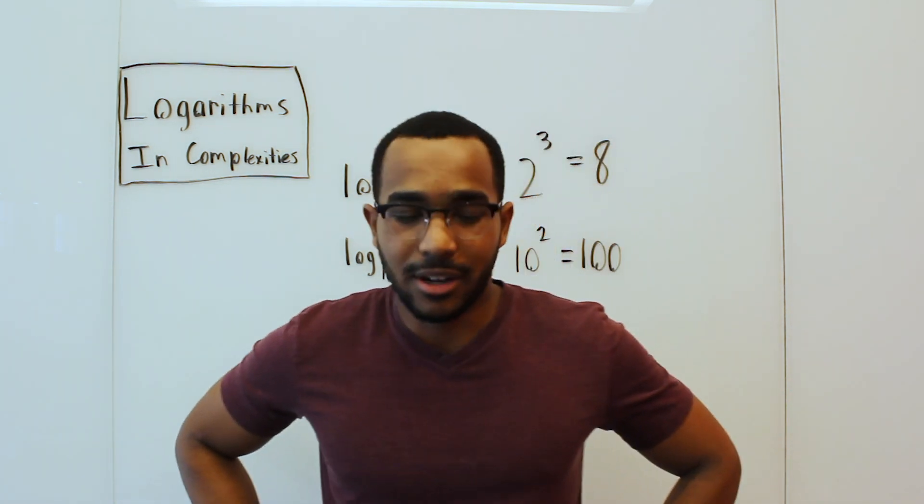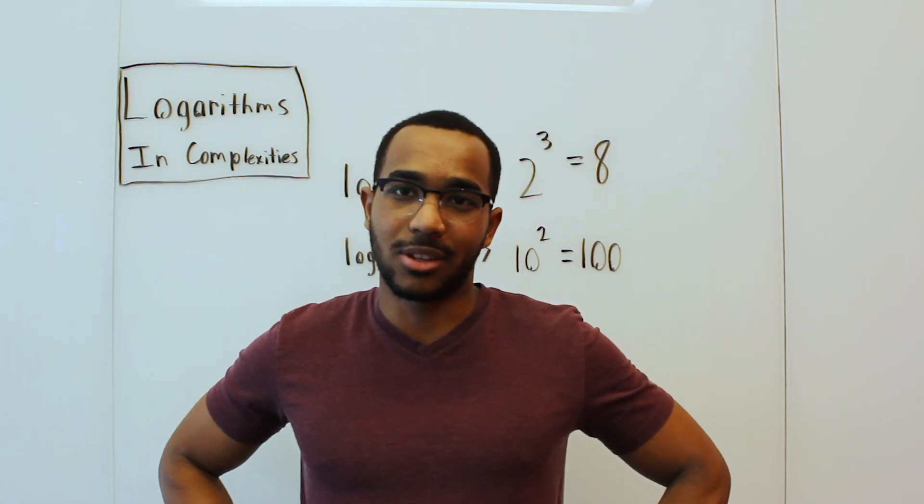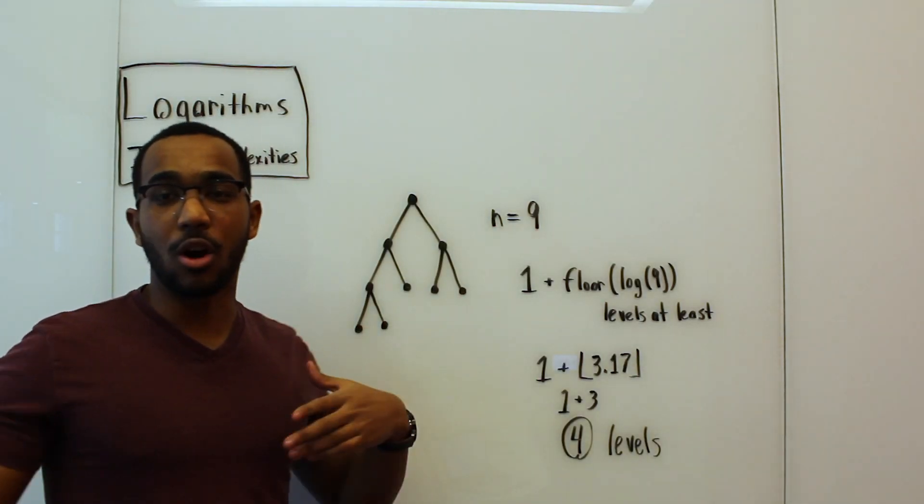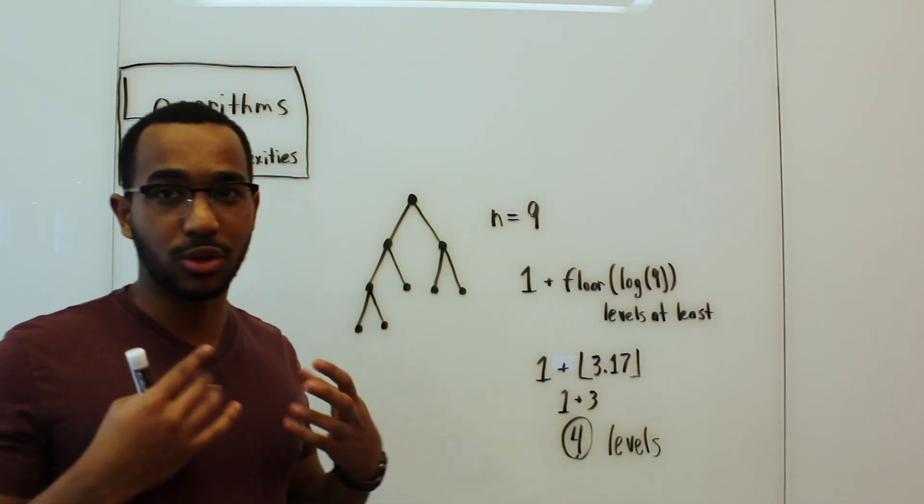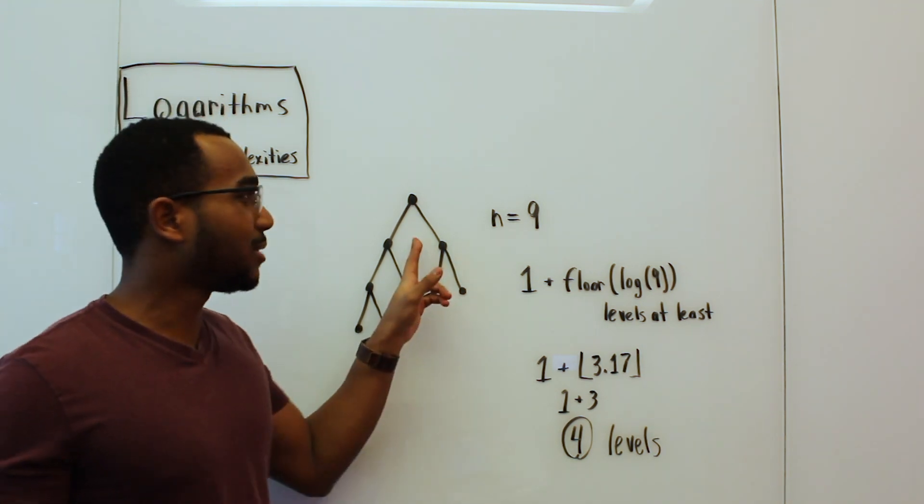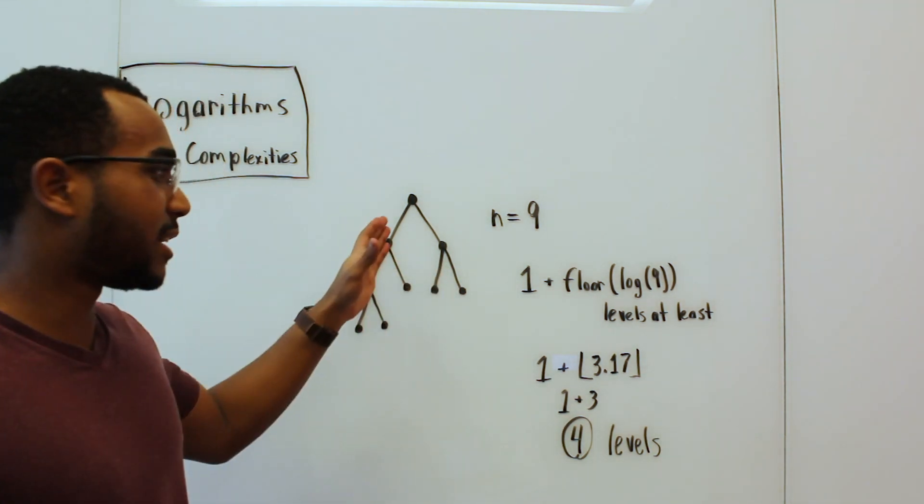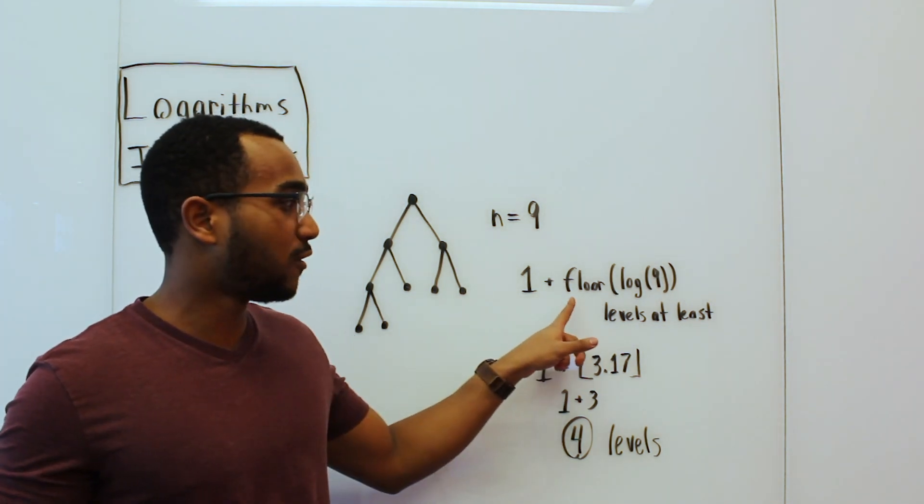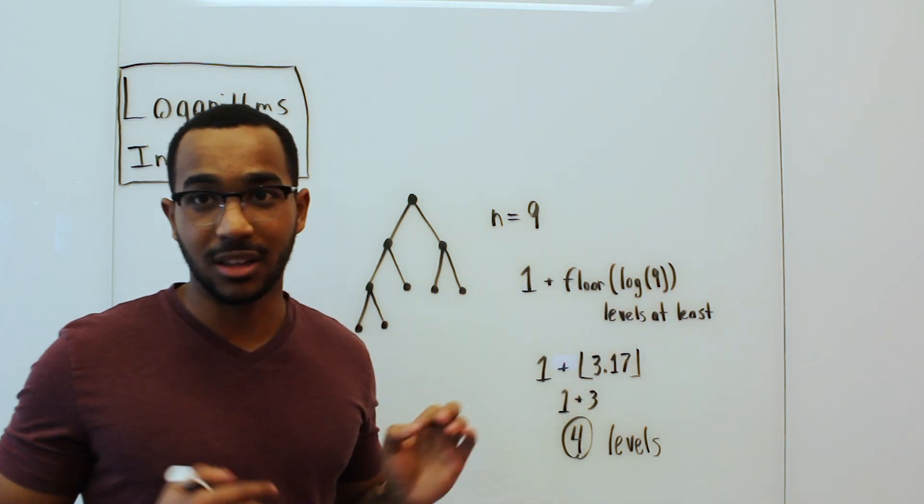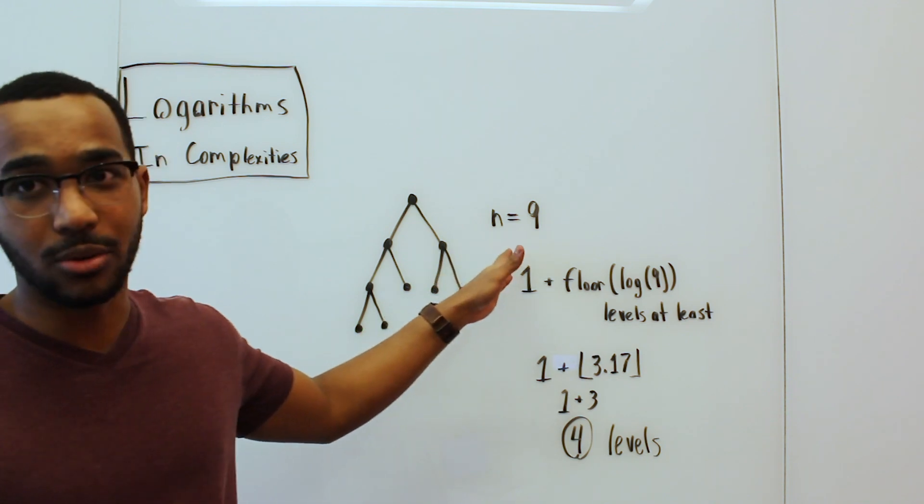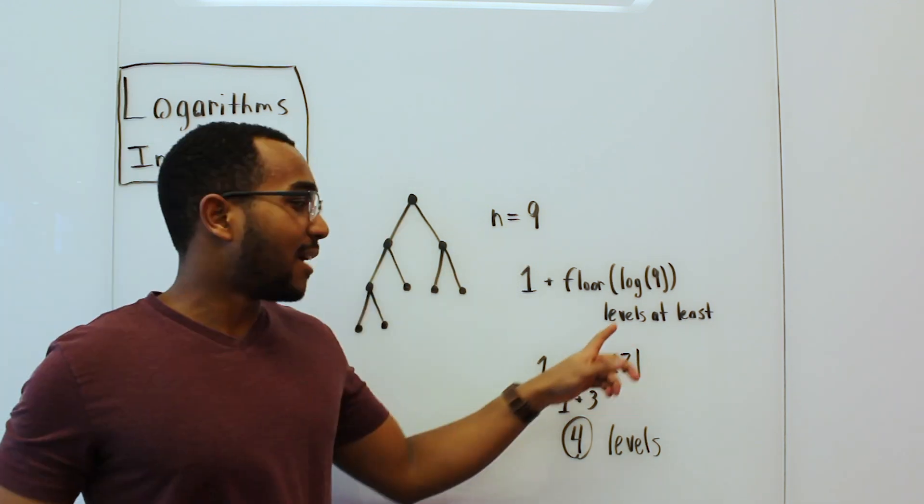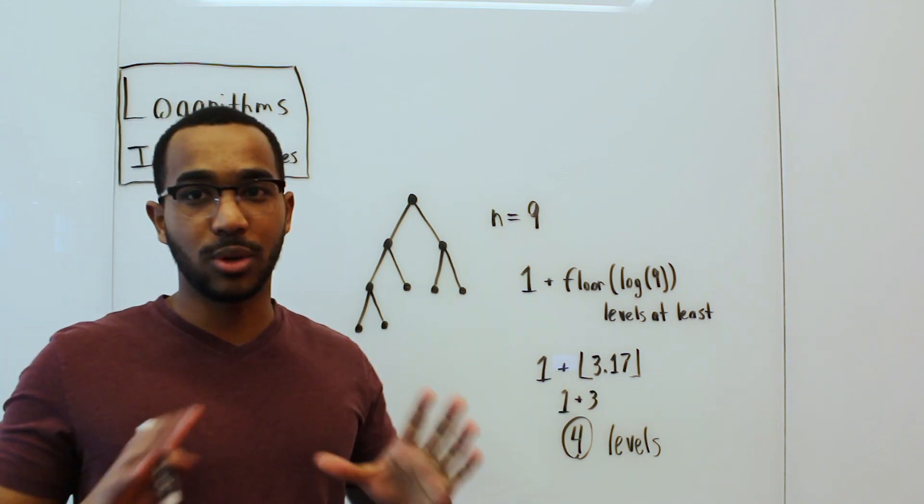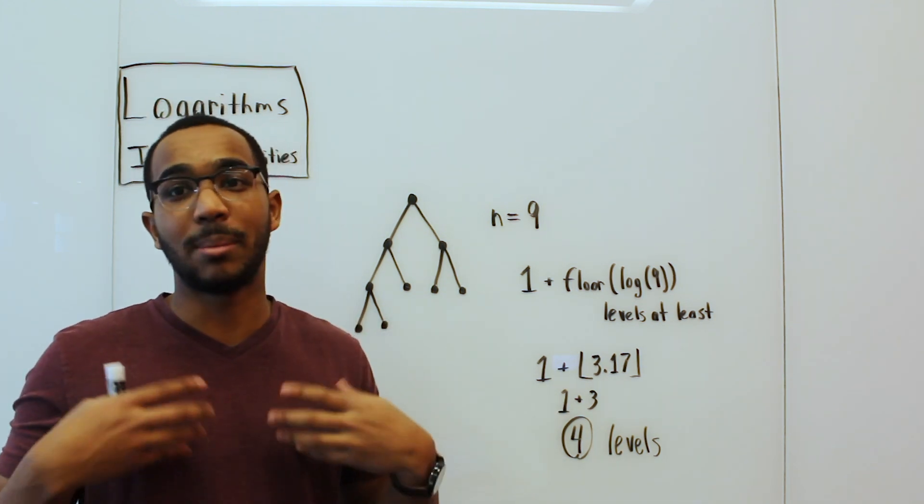Where does this appear in computer science and why do we care about this? Here is a case where our logarithmic time complexity is going to be familiar to us. When we're dealing with any binary structure like a binary tree, we're going to have at least 1 plus the floor of log n levels if we have n nodes. n is 9 in this case. We're using log base 2 because in computer science, we always use log base 2 implicitly.